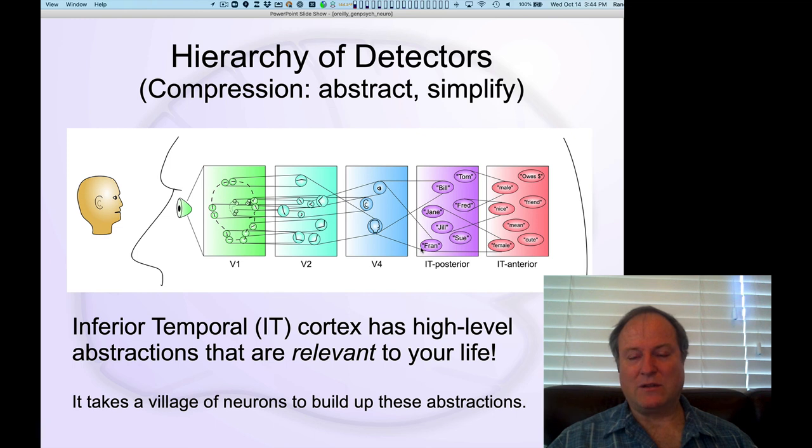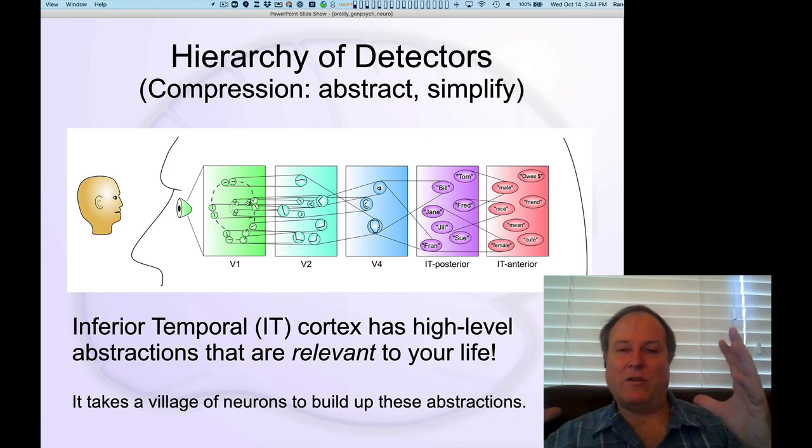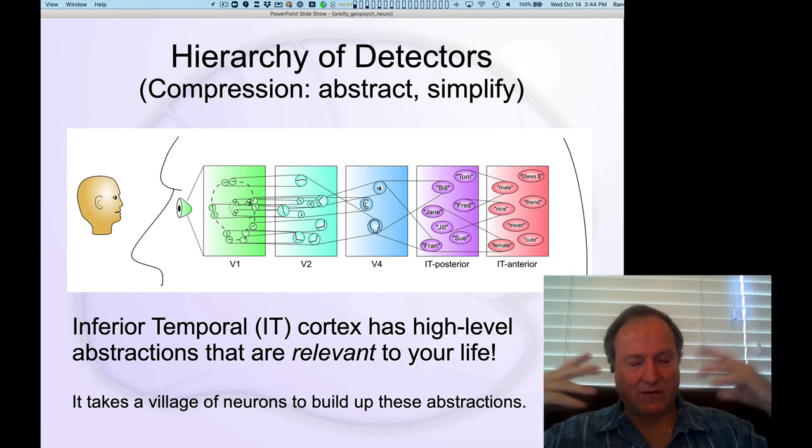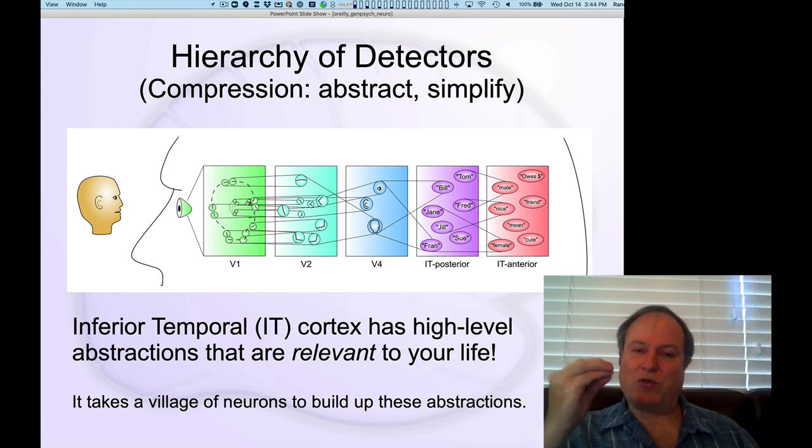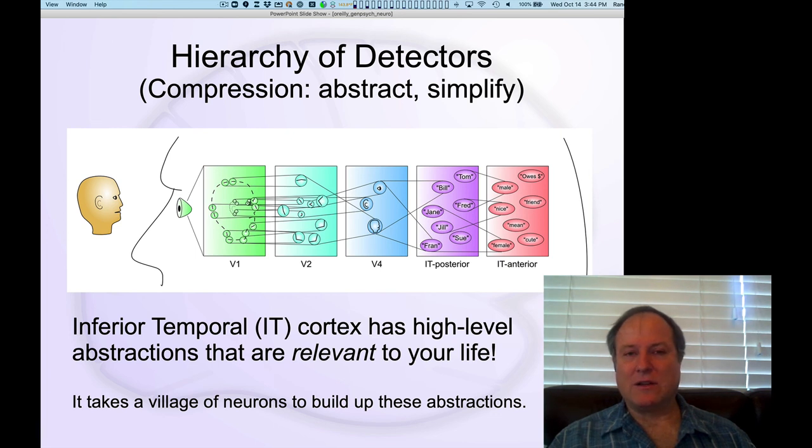And that's ultimately what the brain is ultimately trying to do is compress all that signal coming in, all the kind of incredible detail present visually, compress it down into categories that allow us to act. Because fundamentally, the brain is about action. That's what we ultimately care about is what are we going to do? And so if you can take all those complex signals and turn it into something actionable, that's what we care about. And that's really the point of compression.